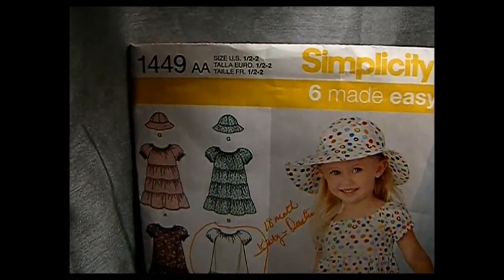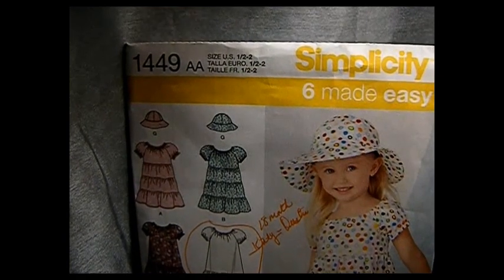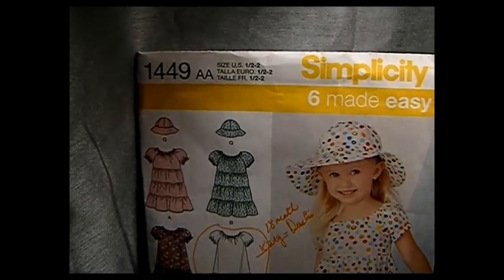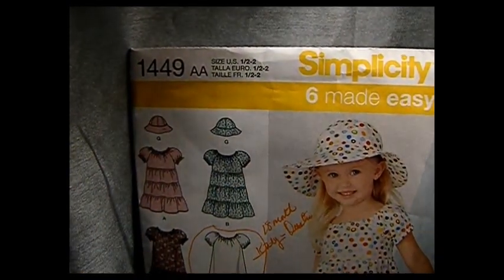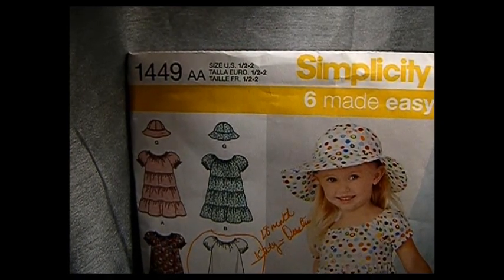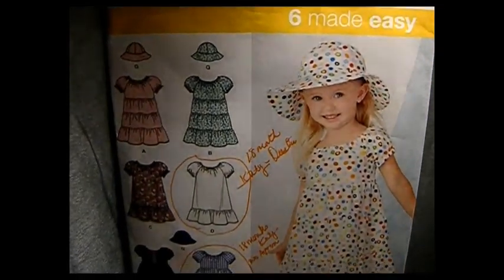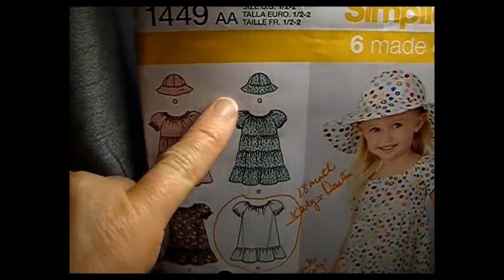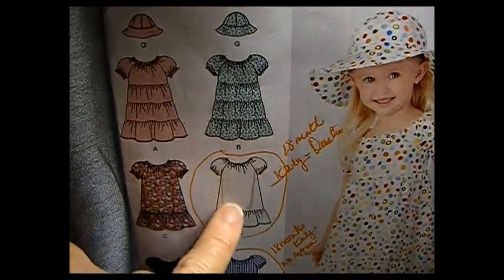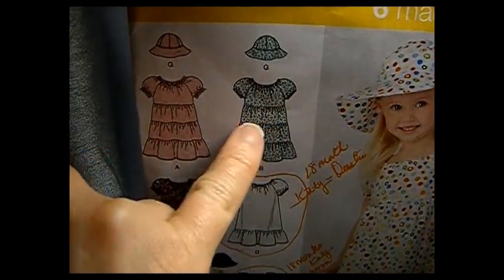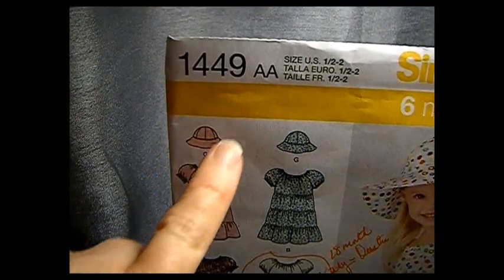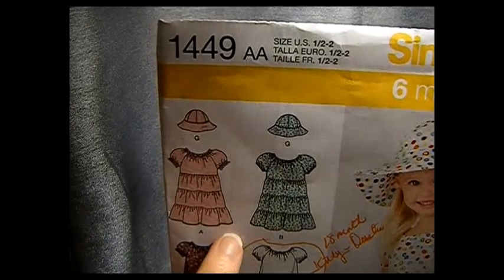But you could also open up the pattern books at the store and find what you like that way. What I like about simplicity is that they have multiple styles of the same dress. Here you'll see the body of the dress is the same, but this has two more gathering pieces. There's 14 pieces, pattern pieces, in this all together.